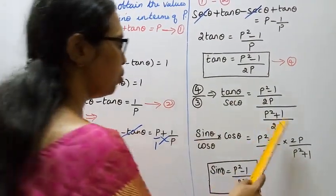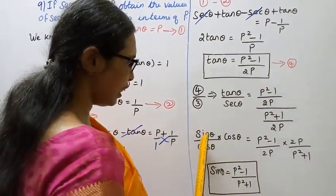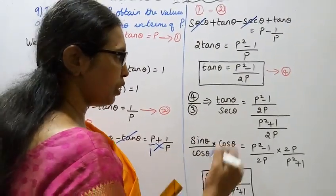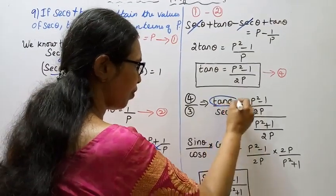Tan θ is sin θ by cos θ. Now since sec θ equals 1 by cos θ, dividing tan θ by sec θ gives...